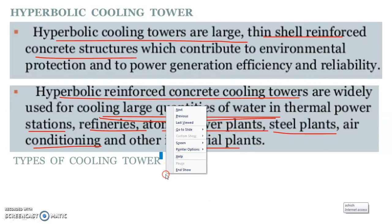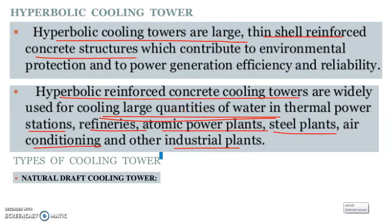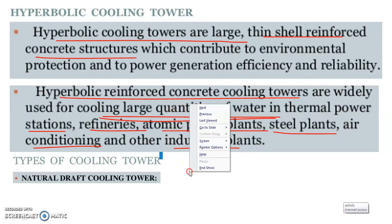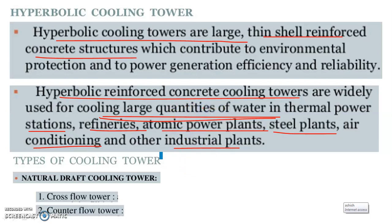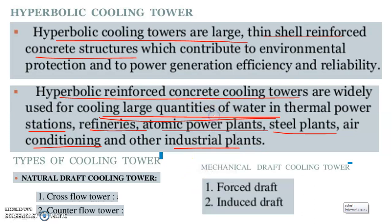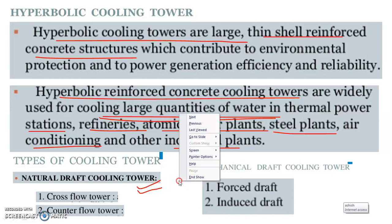What are the types of cooling tower? The first type is the natural draft cooling tower, which has two subtypes: cross flow tower and counter flow tower. The second type is the mechanical draft cooling tower, which also has two subtypes: forced draft and induced draft. The natural draft cooling tower is also called a hyperbolic cooling tower.